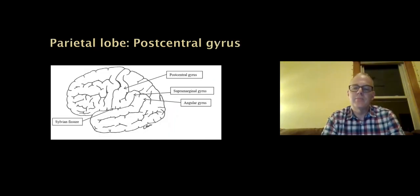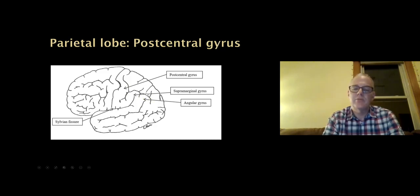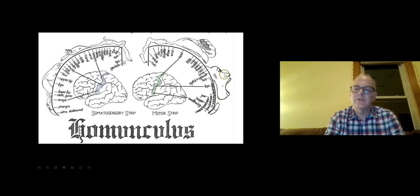Moving back to the parietal lobe — we've mainly talked about the postcentral gyrus for sensation. In this lecture, we'll say more especially about the angular gyrus and its importance. Remember the homunculus for both the motor and sensory strips: the face and lips have a huge representation in the lateral surface, big representation for the hand especially for motor, and then the leg is midline.